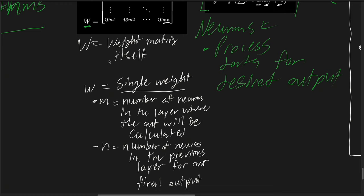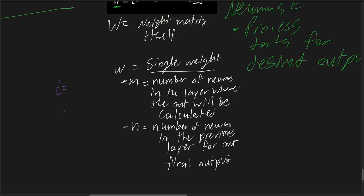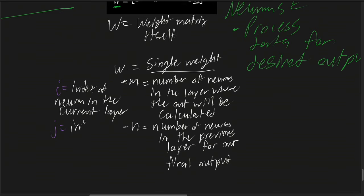Meanwhile, for the individual weight elements, we refer to them using indices i and j. i refers to the index of the neuron in the current layer, while j is the index of the neuron in the previous layer.